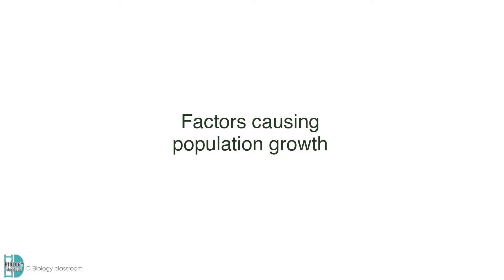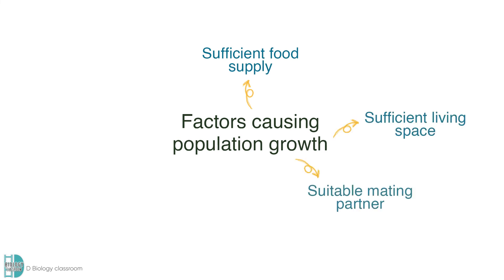The factors causing a population of an organism to be overproduced include sufficient food supply, sufficient living space, suitable mating partner, absence of predator, and absence of competition.